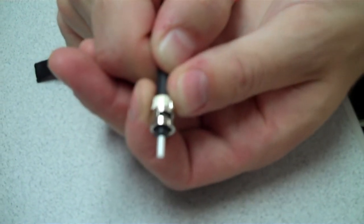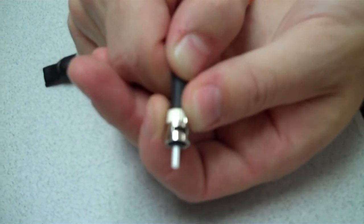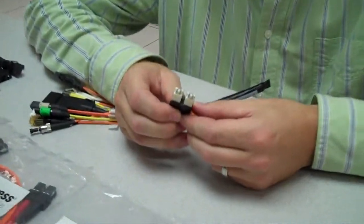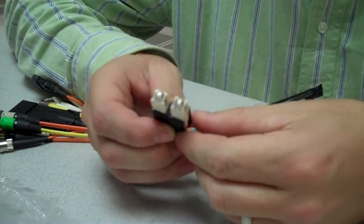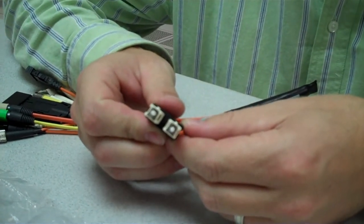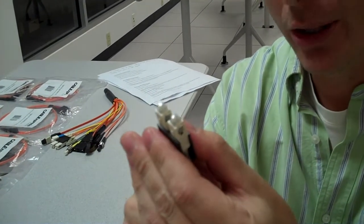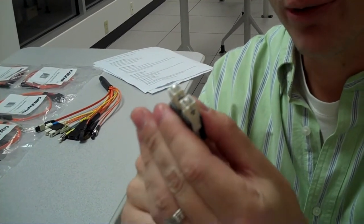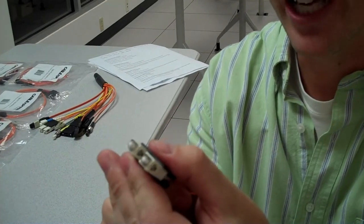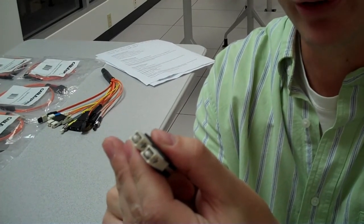Another connector with a 2.5 millimeter ferrule is the SC. This one's typically coming in a duplex format. SC stands for Subscriber Connector and was also developed by NTT. Notice the big design change from round to square and push-pull coupling. This greatly reduces the chance for end face damage during insertion or removal.